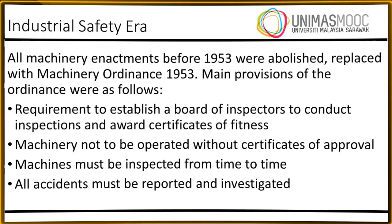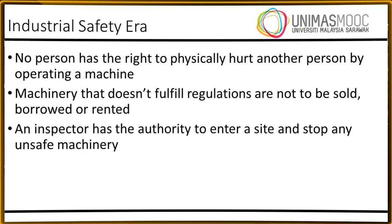In the industrial safety era, all machinery enactments before 1953 were abolished and replaced with Machinery Ordinance 1953. Main provisions included: a requirement to establish a board of inspectors to conduct inspections and award certificates of fitness; machinery not to be operated without certificates of approval; machines must be inspected from time to time; all accidents must be reported and investigated; no person has the right to physically hurt another person by operating a machine; machinery that doesn't fulfill regulations is not to be sold, borrowed, or rented; and an inspector has the authority to enter a site and stop any unsafe machinery.